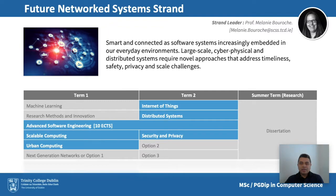The future network systems strand is closely tied to the themes of the National Research Center Connect, which has a long history of innovation, research, and startup companies in the areas of networks and distributed systems. This strand deals with intelligent and connected technologies being employed for increasingly diverse applications in everyday life, addressing challenges of dealing with large-scale cyber-physical and distributed systems — questions of how to deliver them in a timely and safe manner and how to deal with large scale. Key topics include cloud computing, Internet of Things, smart cities, urban computing, and cyber security.